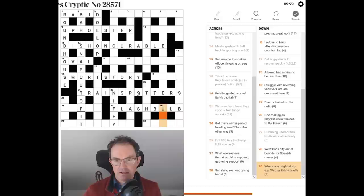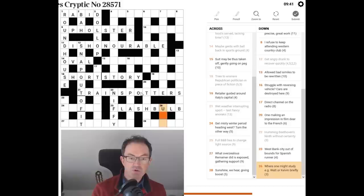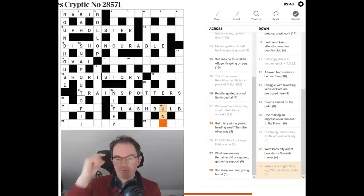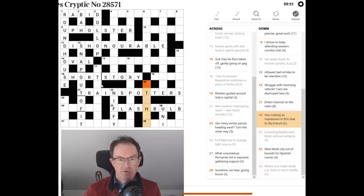So now that one beginning with U. Where one. Uni. Must be where one might study. E.g. Watt or Kelvin briefly. Well Watt and Kelvin are scientific units. And therefore if we treat them briefly. We could cut off their last letter. We could shorten them. And that would give us uni. Which is certainly a place where we might study.